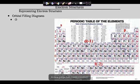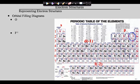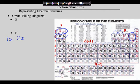Now let's try one with a charge — fluorine with a minus one charge. First locate fluorine; like oxygen, it's in the 2p. To build up to it, we need electrons 1 and 2 in the 1s, electrons 3 and 4 in the 2s, and electrons 5, 6, 7, 8, and 9 in the 2p.